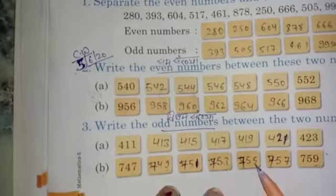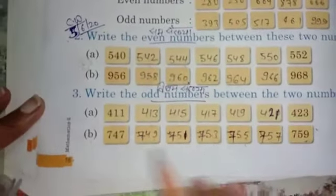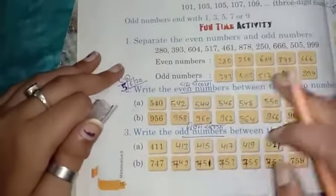755 - the 5 also does not come in the 2 times table, 757 - the 7 also does not come in the 2 times table. So thank you my students, have a nice day.